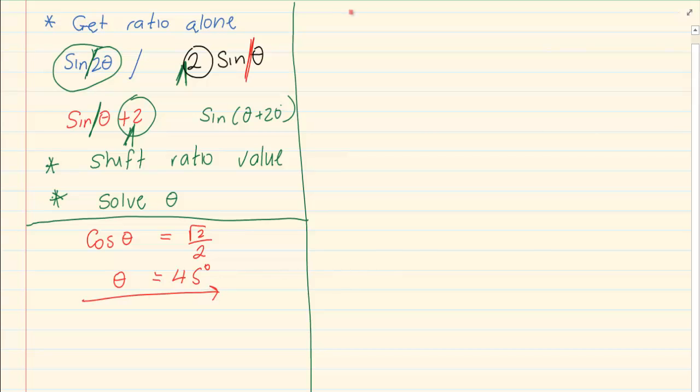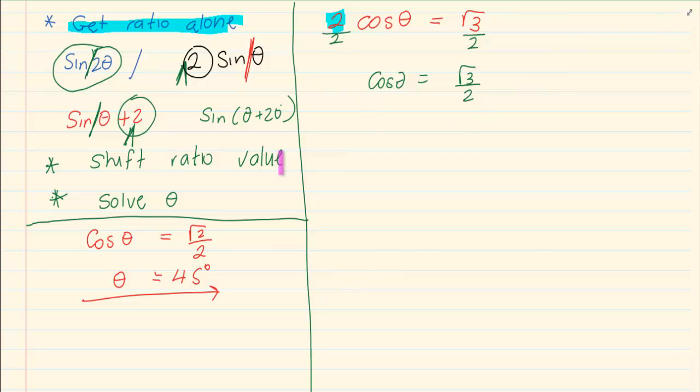Now if I gave you 2 cos θ = √3, you have to get your ratio alone. The 2 in front must be removed. So we're going to divide by 2. Now we have cos θ = √3/2. Your ratio is now alone. So you press shift, cos, √3/2.